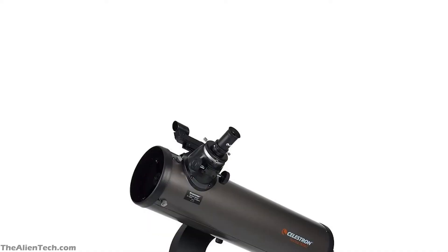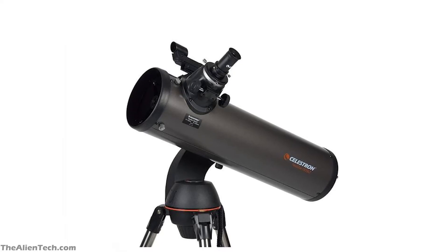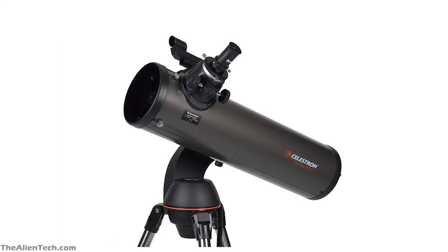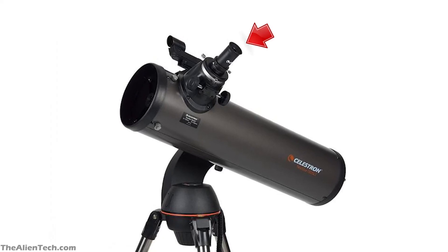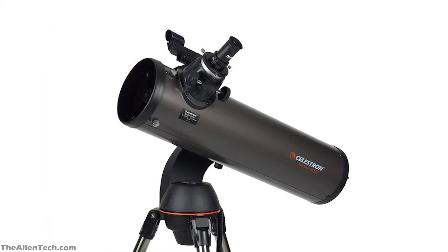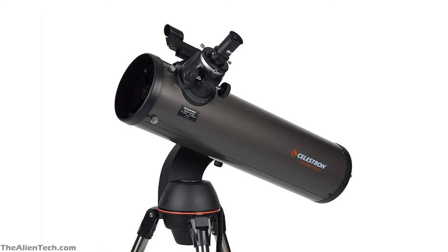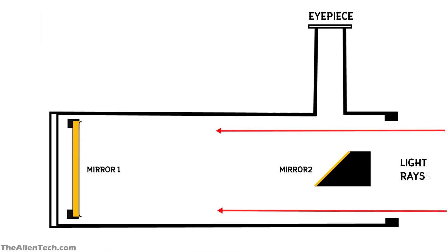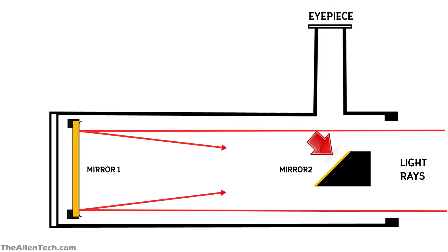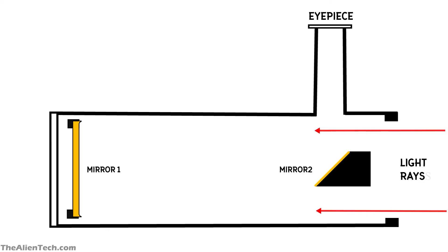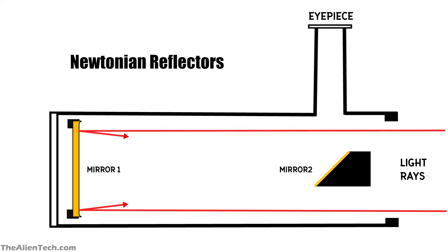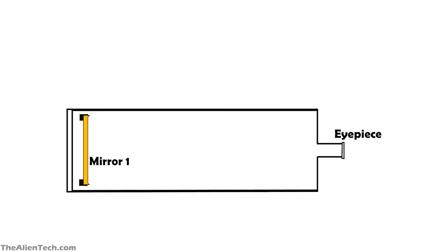A reflector telescope does not look like a traditional telescope — these telescopes use mirrors instead of lenses to collect light. The eyepiece is at the front, which is how you can recognize one. A typical reflector telescope has two mirrors: one at the bottom that collects light and reflects it onto a secondary mirror, which then directs the light towards the eyepiece or a camera. Initially, designers considered using only one primary mirror with an eyepiece at the front, but a person's head would block the primary mirror and limit light collection.